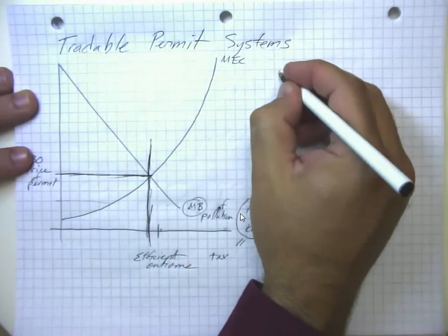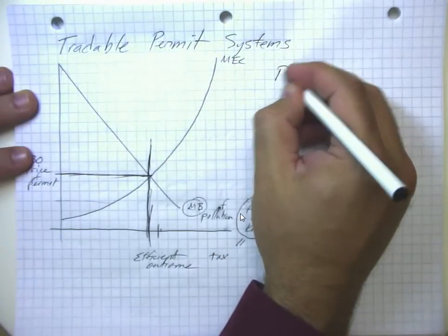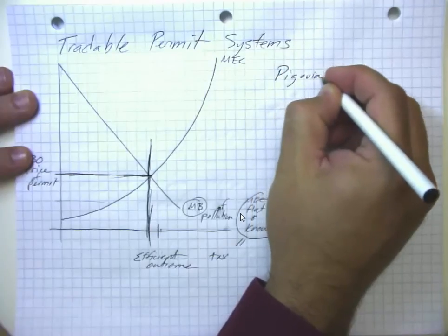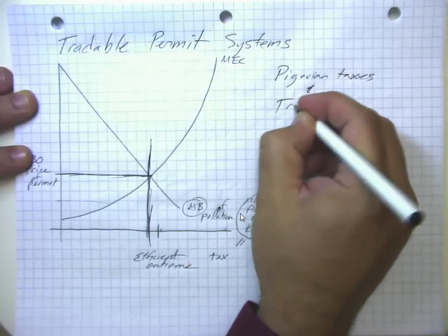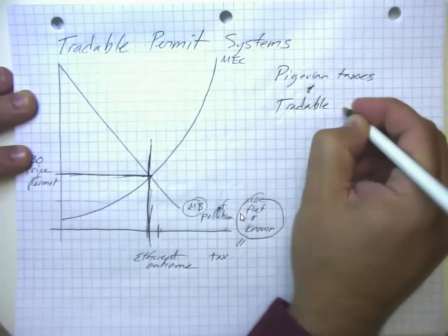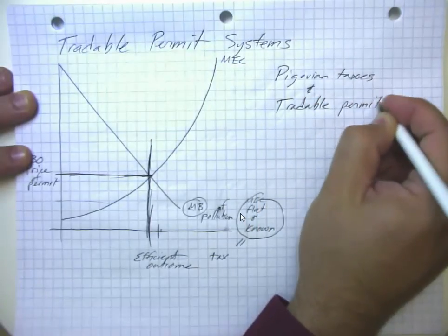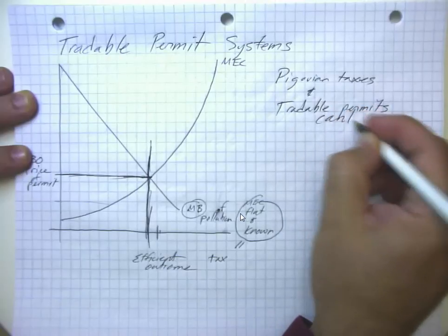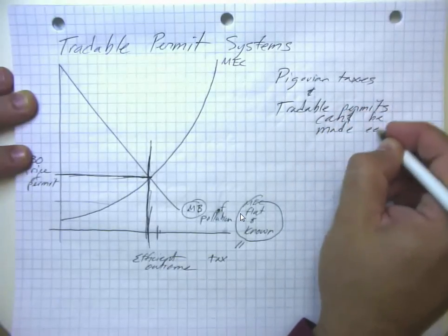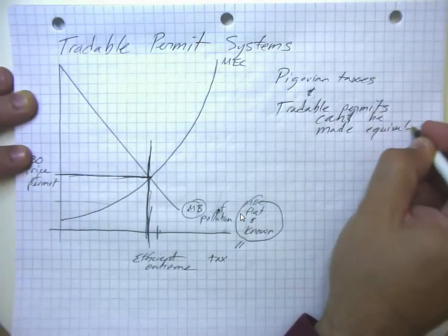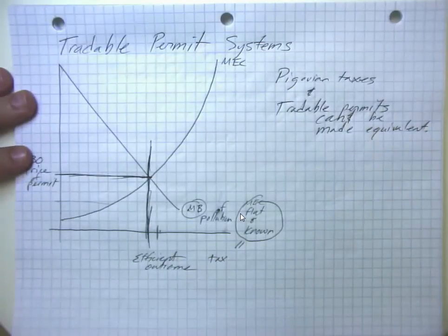And notice Pigovian taxes and tradable permits can be made equivalent. Or at least mostly equivalent. There is a slight difference here.